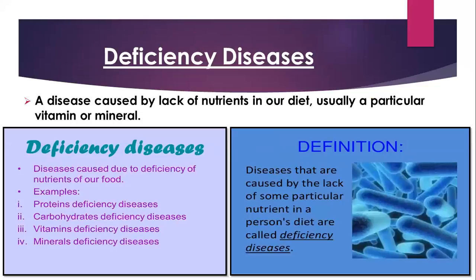Deficiency diseases are diseases caused due to lack of nutrients over a long period in the diet. It can be prevented by taking a balanced diet. There are different types of deficiency diseases — protein deficiency, carbohydrates, vitamins, and minerals.